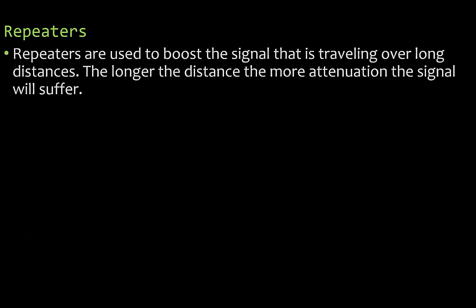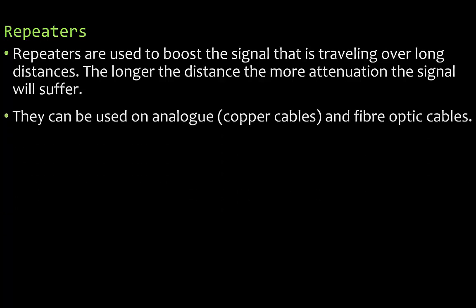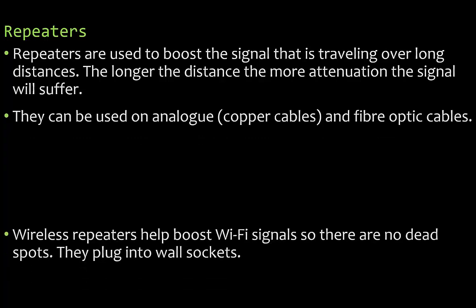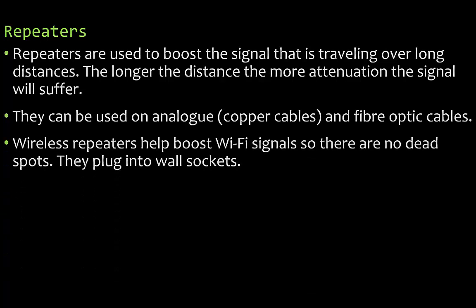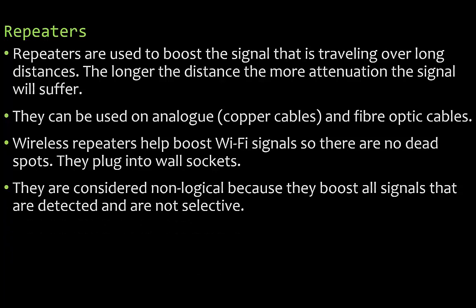Repeaters boost the signal travelling over long distances — the longer the distance, the more attenuation or degrading of the signal will occur. They can be used on analog copper cables and on fibre optic cables. Wireless repeaters help boost Wi-Fi signals to eliminate dead spots and simply plug into wall sockets. They are considered non-logical because they boost all detected signals without being selective.